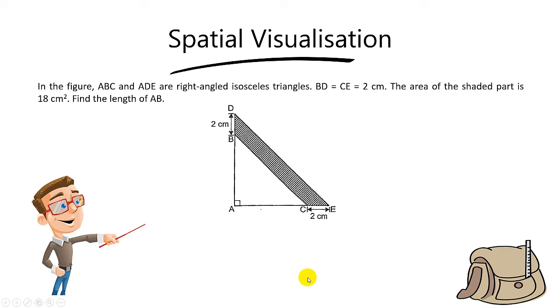Let's look at another tricky question involving spatial visualization. In the figure, ABC and ADE are right-angled isosceles triangles. We have ABC here as well as ADE.